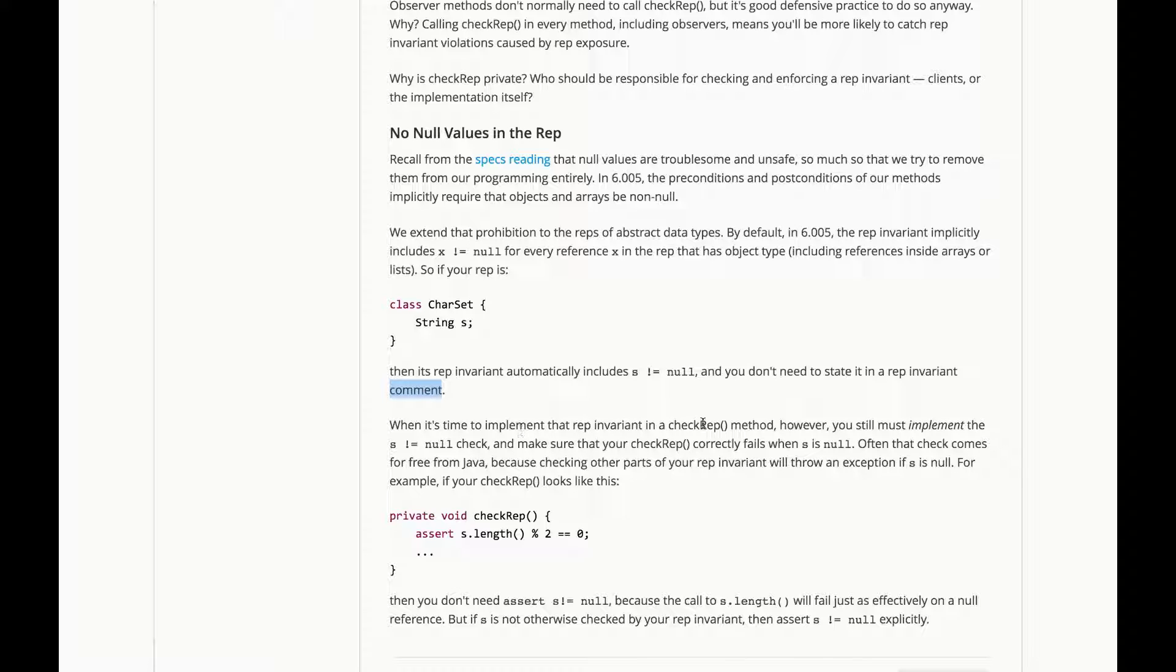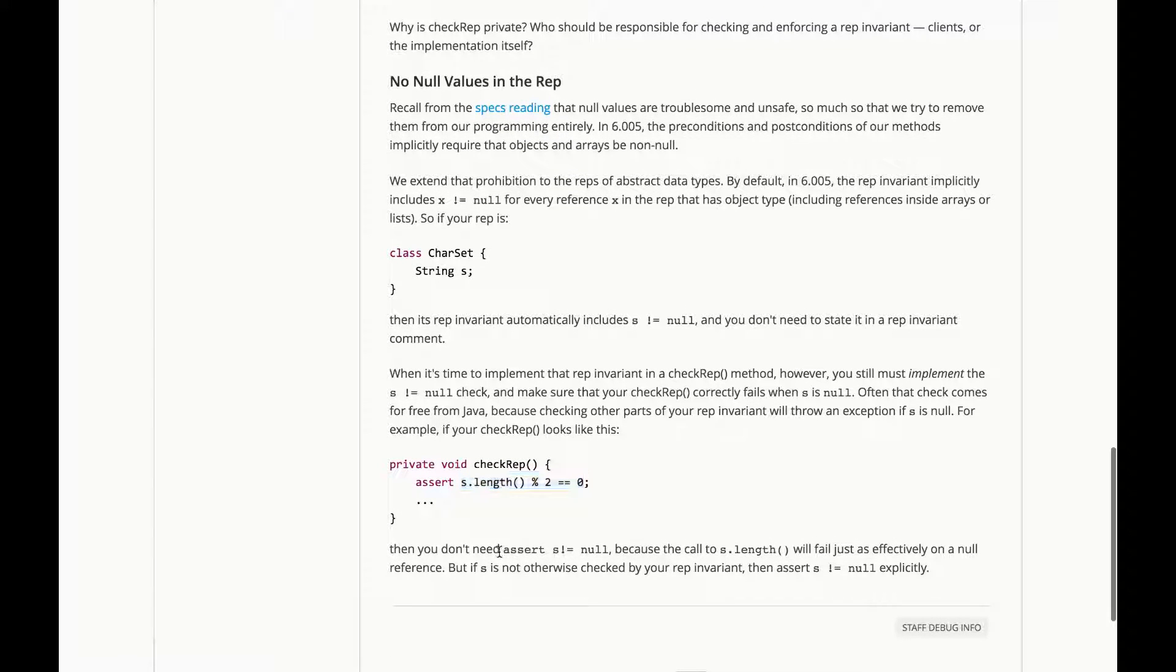But when it's time to implement that rep invariant in a CheckRep method, you should still implement the s is not equal to null check. Make sure that your CheckRep correctly fails when s is null. Often that check comes for free from Java, because checking other parts of your rep invariant will throw an exception if s is null. For example, if your CheckRep looks like this because you're checking the length of s, then you don't need to assert s is not equal to null, because the call to s.length will fail just as effectively on a null reference. But if s is not otherwise checked by the rep invariant, then assert s is not equal to null explicitly.